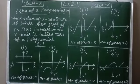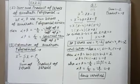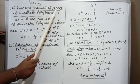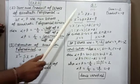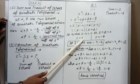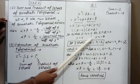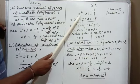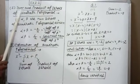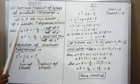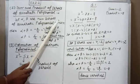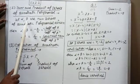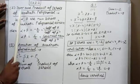Now we move to Exercise 2.2, which has two basic concepts. The first is sum and product of zeros. In a polynomial we call them zeros, and in a quadratic equation we call them roots — they refer to the values of the variable. The actual meaning of zeros is that if we substitute these values into the equation, we get zero. Let alpha and beta be the two zeros of a quadratic polynomial, where the highest power is two, so we have exactly two zeros.